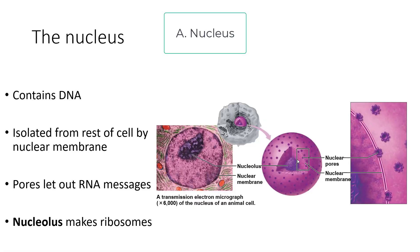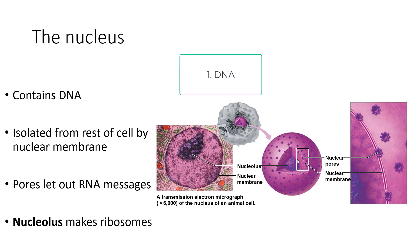The nucleus contains DNA, which is used in heredity, making it the center of heredity. It is isolated from the rest of the cell by a nuclear membrane. All organelles are separated from other organelles by membranes — these membrane-bound organelles are part of a eukaryotic cell. The pores in this specialized nuclear membrane let out RNA messages, which are translated into proteins by ribosomes. Ribosomes are in fact made by a sub-part of the nucleus called the nucleolus.